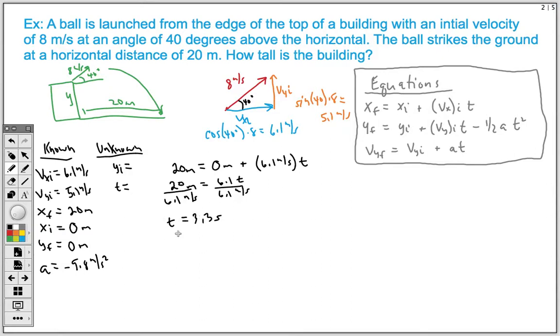Now that we know our time, we're going to plug that into this middle equation and solve for yi. So our yf ends up being zero meters. We don't know what yi is. We do know vyi, which is 5.1 meters per second. We're going to multiply that by our 3.3 seconds.